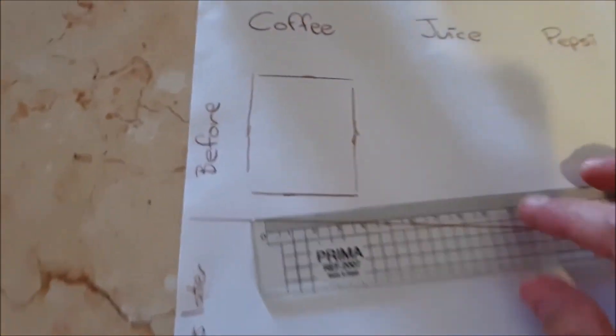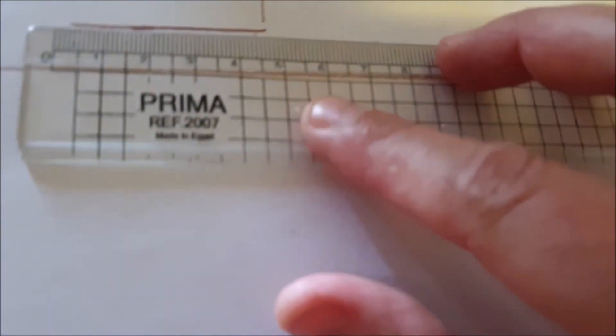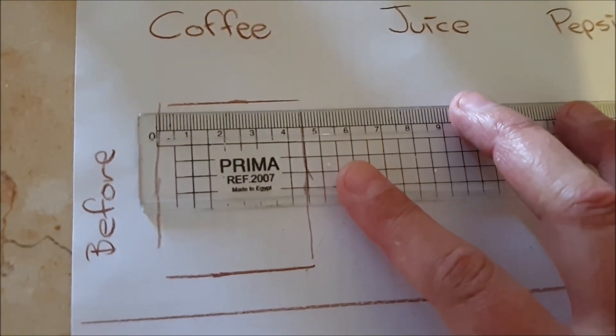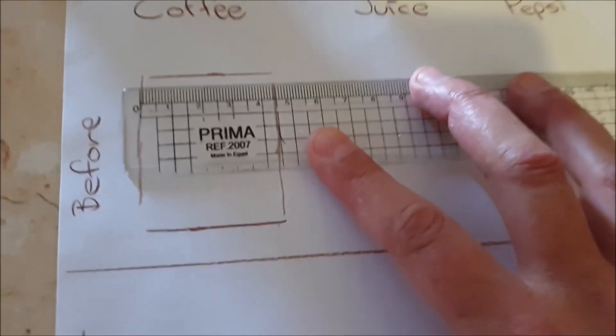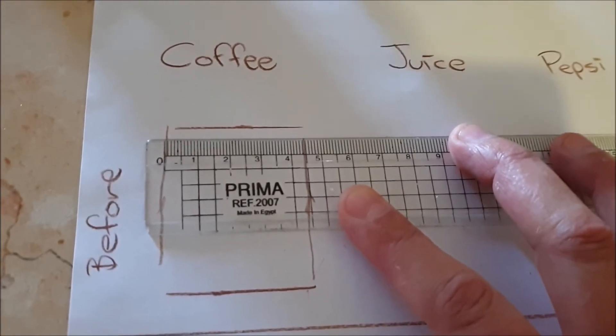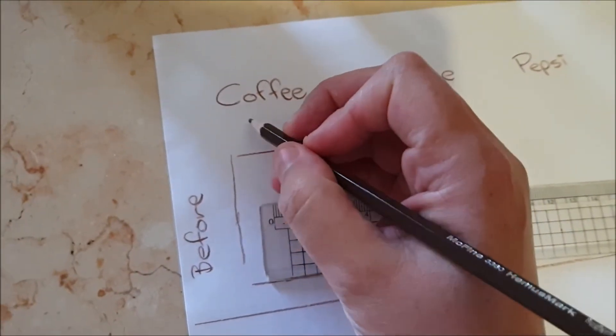So here we can see my egg. Let's measure my egg. Now my egg is currently 4.5 centimeters across, so I'm going to write 45 millimeters.